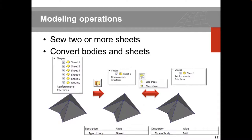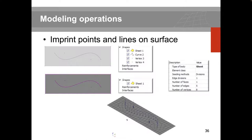There are other geometry improvement options: sewing sheets, converting bodies and sheets in both directions (a set of sheets can become a body, and a body can be extracted into sheets). For loads and boundary conditions, the imprint option lets you trace and track imposed loads or boundary conditions on reference geometry. For example, you can imprint curve lines and vertices into a face, then apply loads to those specific sub-components.